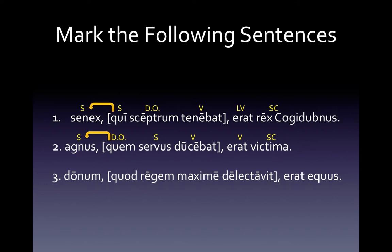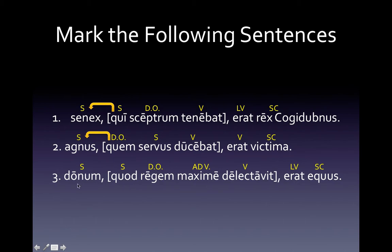Number three: we have 'quad regum maxima delectawit erat equus.' I have 'quad' through 'delectawit' bracketed off because 'quad' is beginning the relative clause and 'delectawit' as the verb is ending the relative clause. Here are all of our markings. 'Quad' is neuter and singular. 'Donum' is neuter and singular — therefore that's the antecedent. So: 'the gift which delighted the king very much was a horse.'